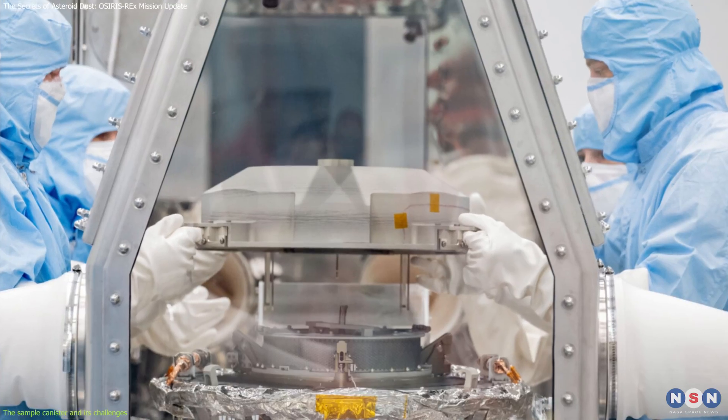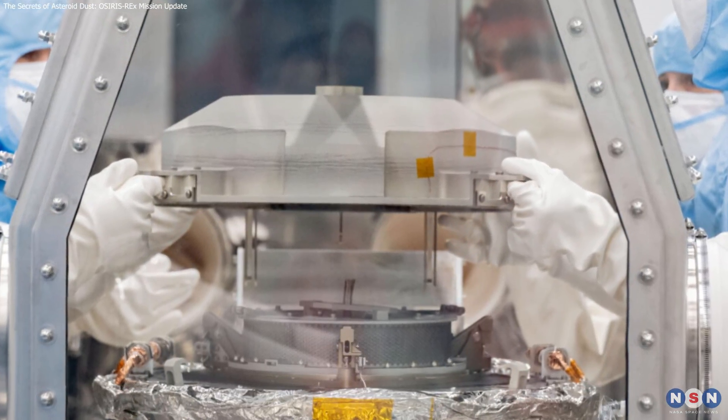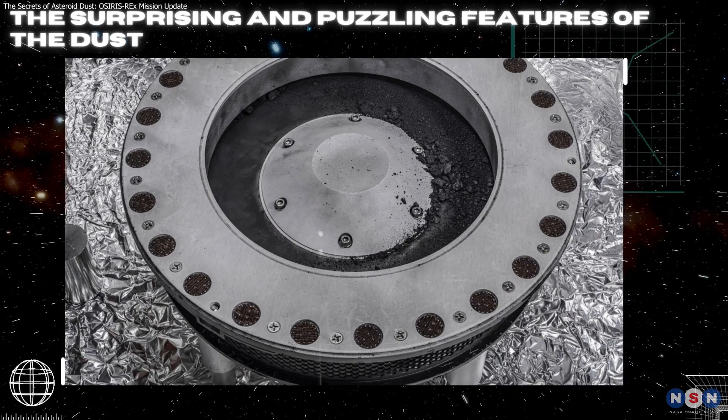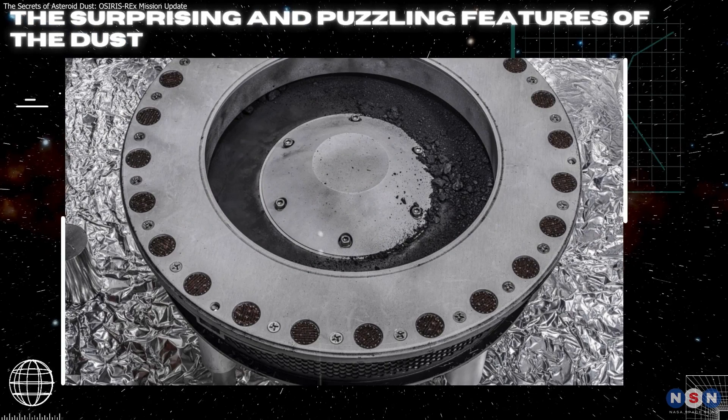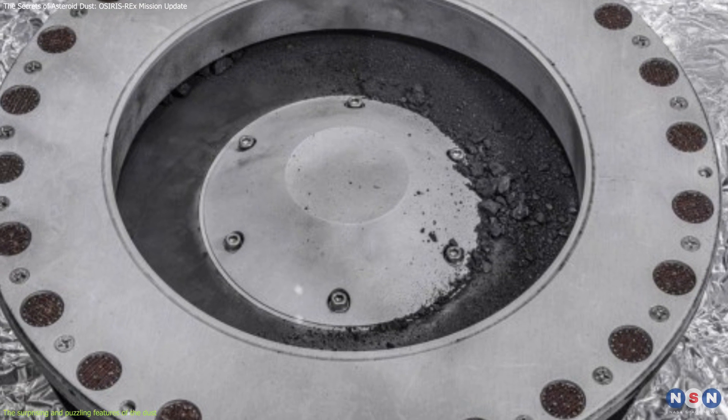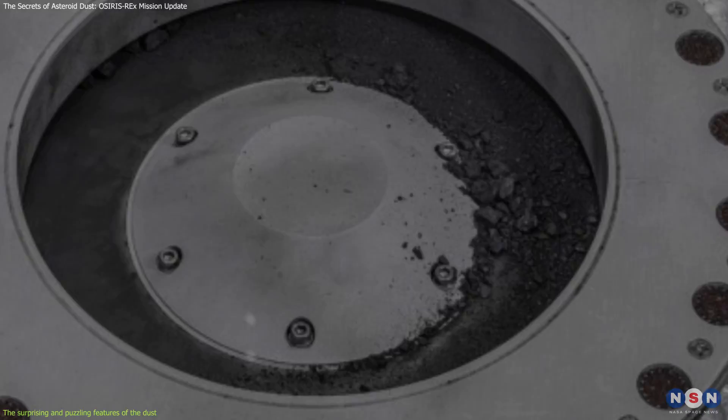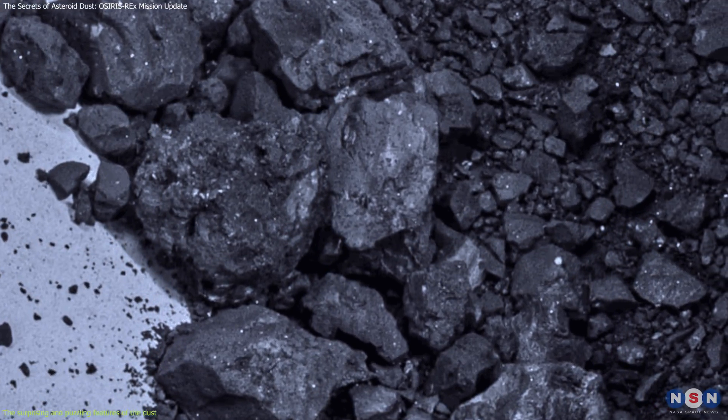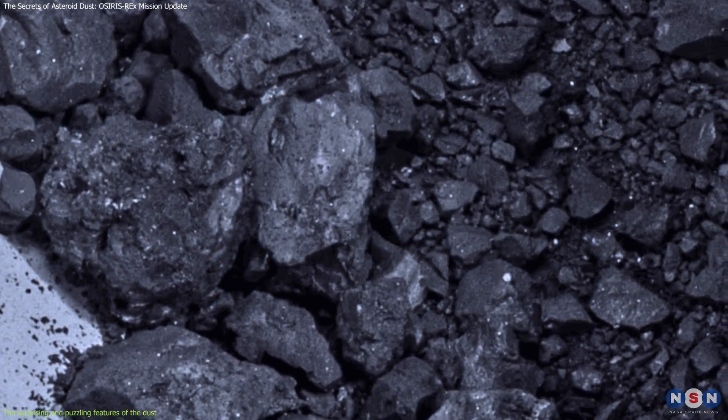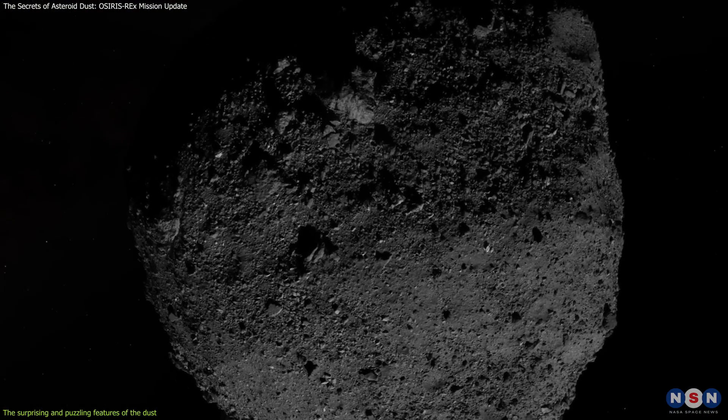But that was not the only challenge. There was something else that made the extraction process even more difficult. The first analysis of the dust revealed some surprising and puzzling features that the scientists did not expect to see. For instance, the dust had a bluish sheen that was visible to the naked eye, which could indicate that the dust reflects light differently than the asteroid surface.